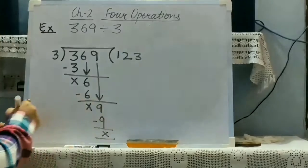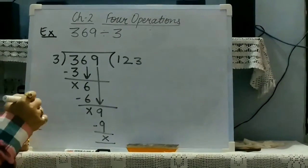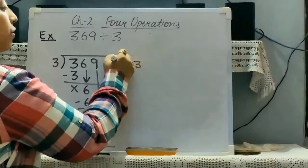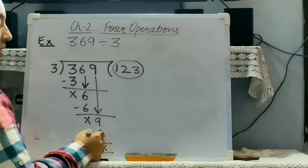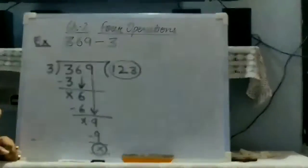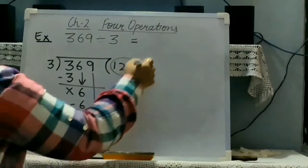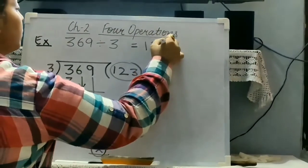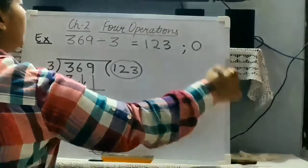Now you can see, we have got the answer in two terms. First, 123. And second, this cross. Cross means 0.